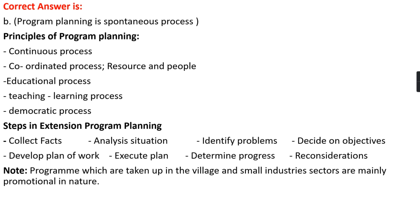After analyzing the situation, we identify the problem of that rural area. Then after identifying the problem, we decide on objectives and develop a plan of work accordingly. We then execute the plan, determine whether it is progressing according to plan, and at the end evaluate whether the program was done properly and reconsider it. Note that programs taken up in the village and small industry sector are mainly promotional in nature.